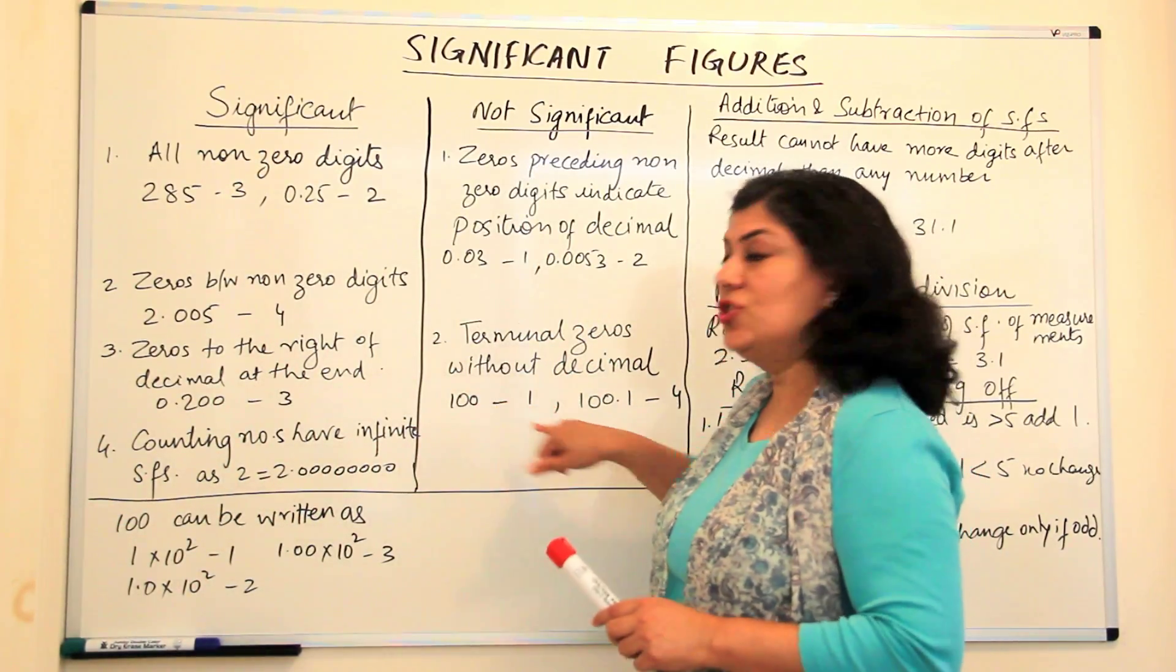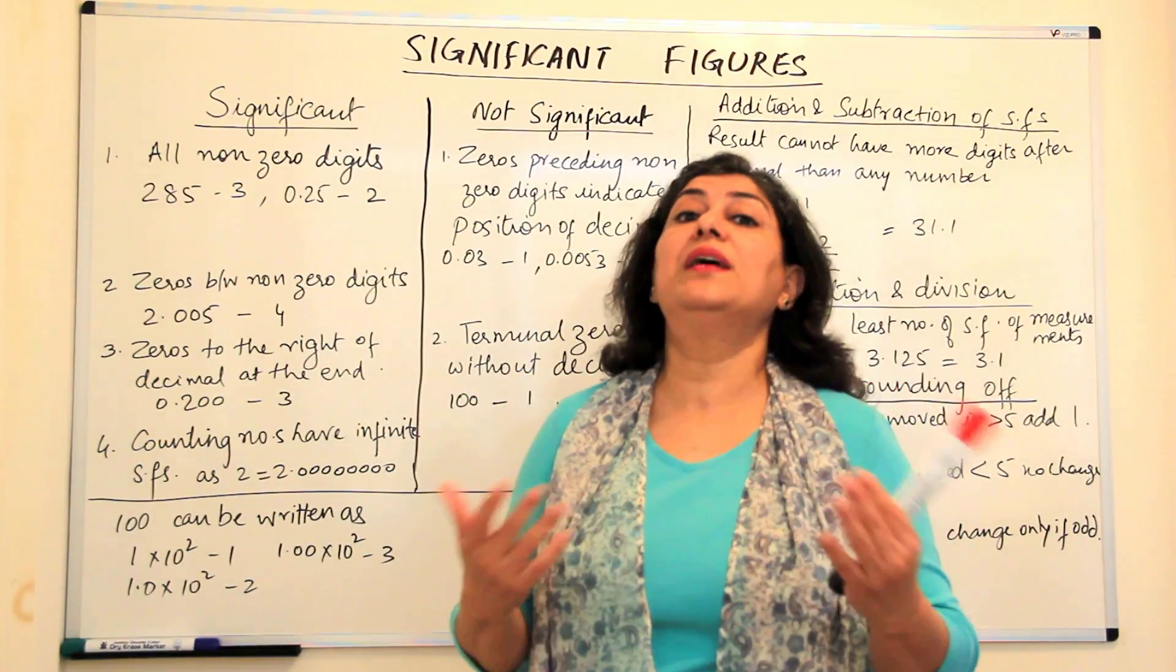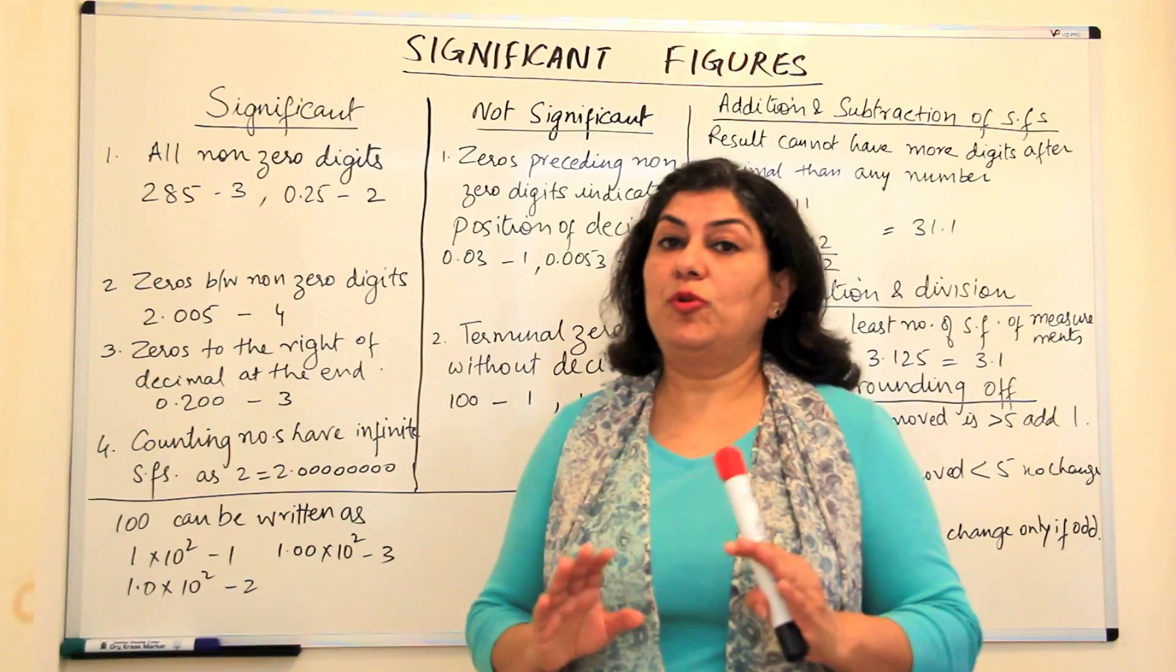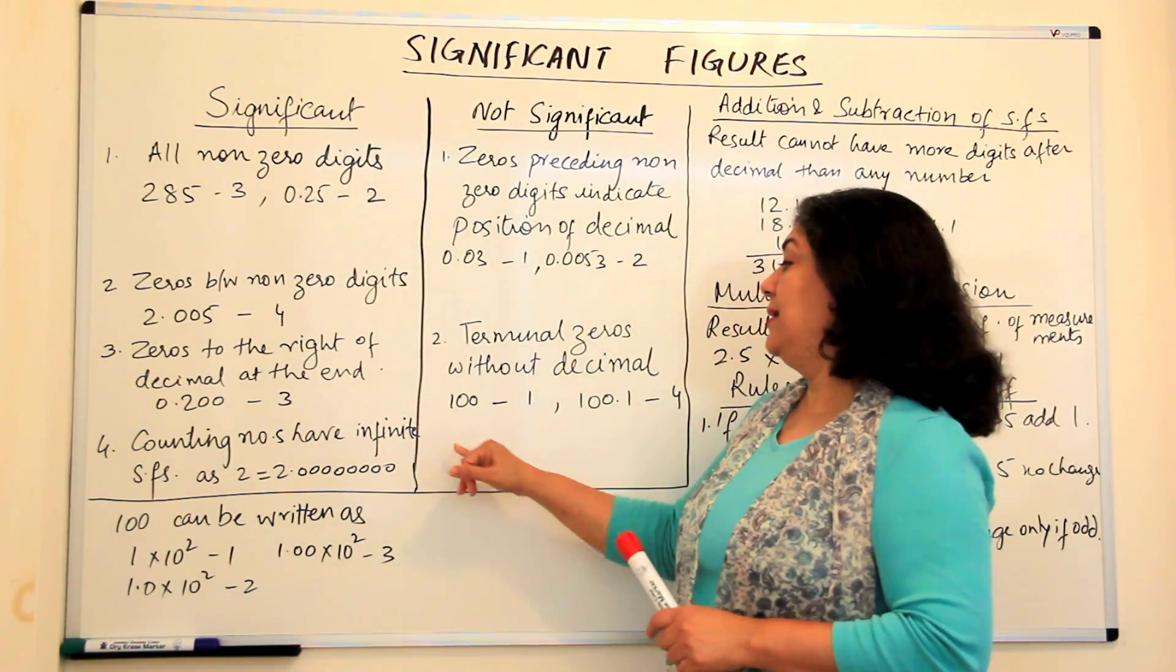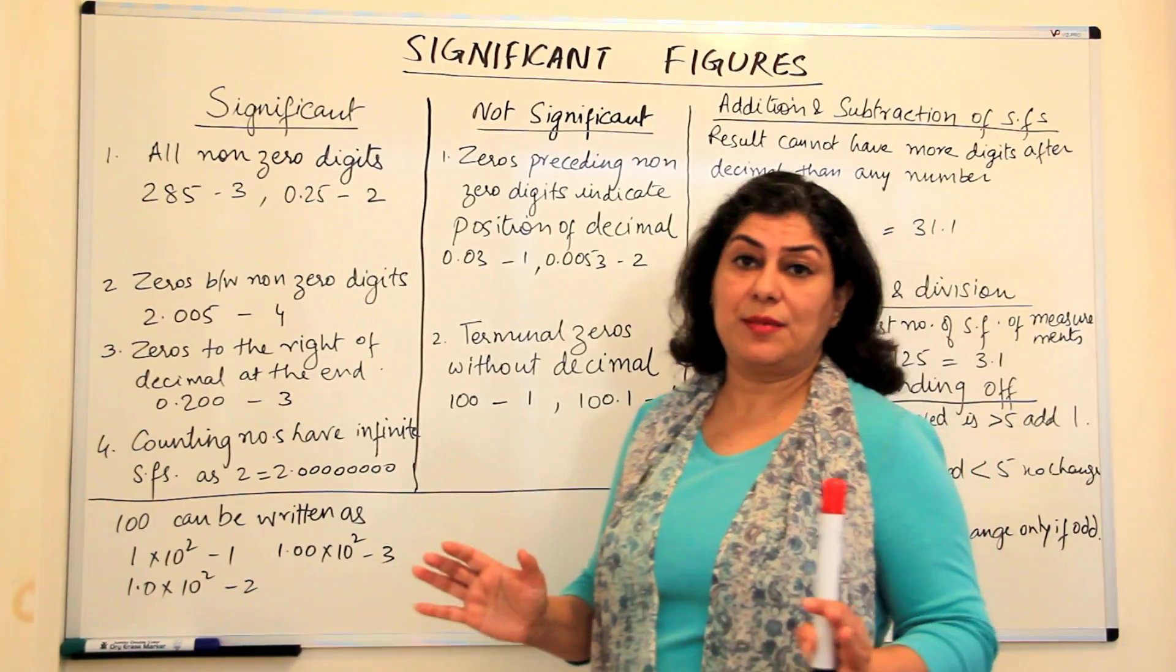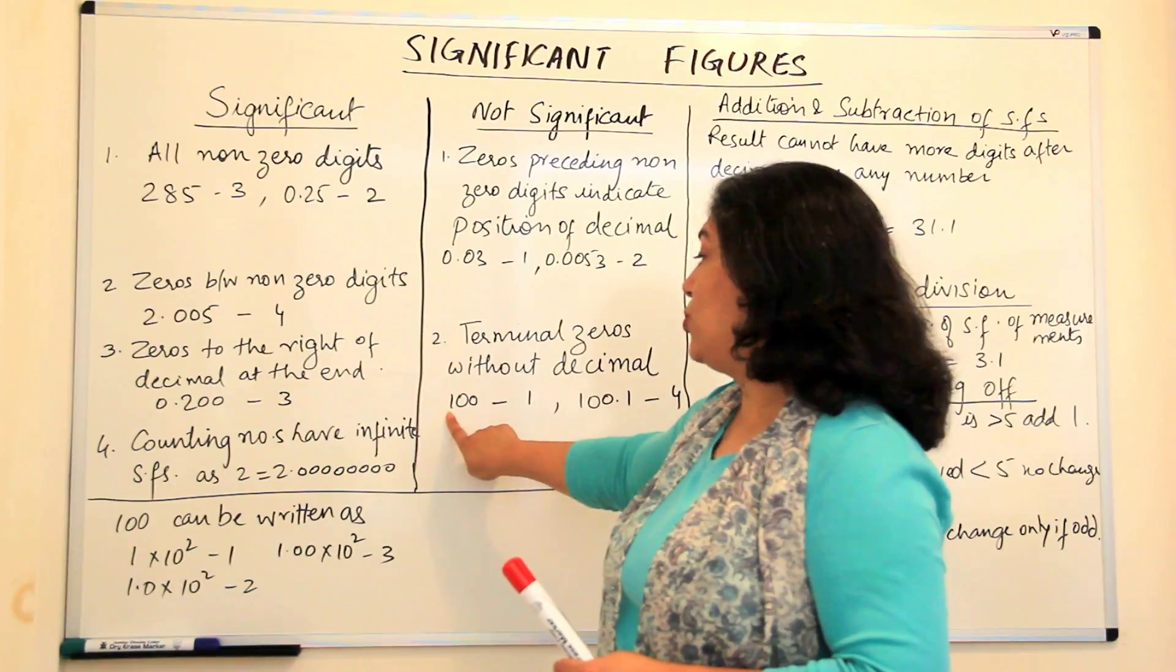So when it is ending in zeros, it is very approximate. We assume that it could be a very approximate reading. Usually when a number ends in zeros and there is no decimal place, then we assume that the accuracy itself is only in hundreds.